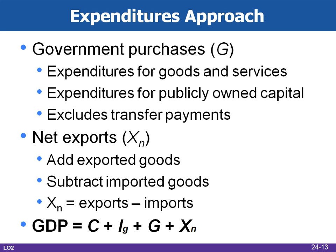Net exports are calculated by subtracting the value of imported goods from the value of exported goods. Adding up all four components provides a measure of GDP — the market value of a specific year's total output. In the United States in 2009, GDP was $14,256,000,000,000, nearly triple the GDP of Japan and China, as shown in Global Perspective 24.1.